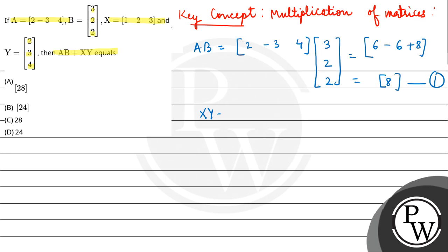The second one is XY. So X is [1, 2, 3], Y is [2, 3, 4]. So this comes out to be 1 into 2 = 2, plus 2 into 3 = 6, plus 3 into 4 = 12, that is 20.